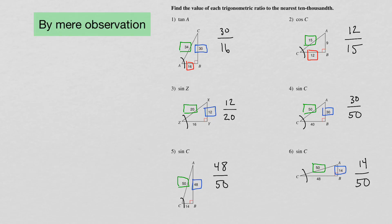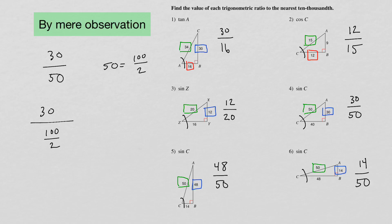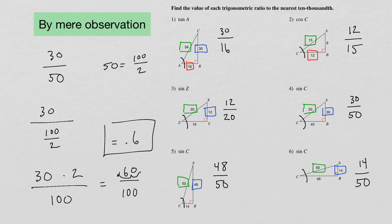For number four, sine of C, we have 30 over 50. We're going to use the Vedic math formula by mirror observation. We're saying 50 equals 100 over 2, so essentially we have 30 divided by 100 over 2, which is the same as 30 times 2 over 100. So we get 60 over 100 — just move the decimal over two places — and our answer is 0.6.